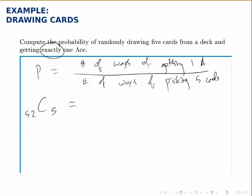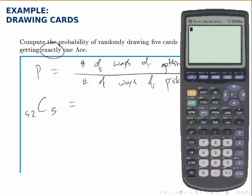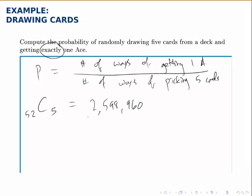So we want 52 NCR 5. On the calculator we type in 52, go to the math probability menu, select NCR 5, and there are a total of 2,598,960 card hands that you can pick. About 2.5 million unique possibilities for what your hand could look like.